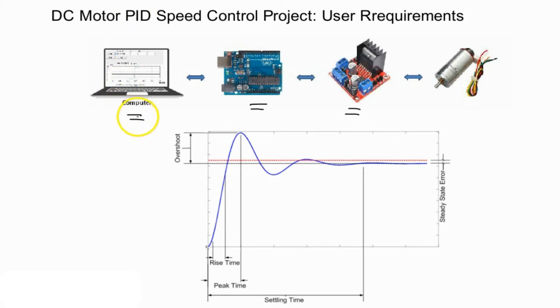The computer in this case will be used to enter the PID parameters and the desired RPM for the DC motor. The Arduino will be mainly responsible for the processing of the information to output the correct pulse width modulated signal, which is then fed to the H-bridge to deliver the right current and voltage to the DC motor.